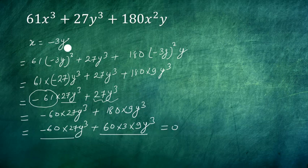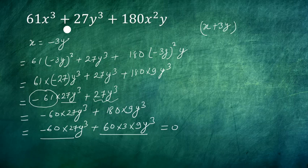This means by remainder theorem, x + 3y is a factor of the polynomial.